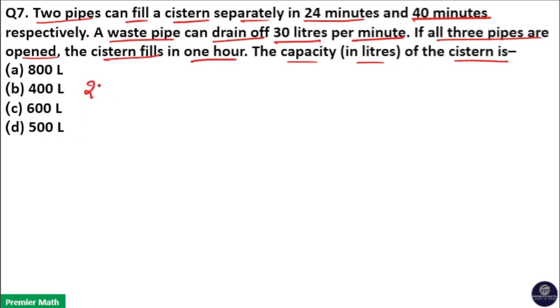Here, the first pipe can fill this tank in 24 minutes, the second pipe can fill this tank in 40 minutes, and the third pipe, a waste pipe, can drain off 30 liters per minute. We don't know in how much time this waste pipe will empty this tank. So I will take x minutes, the time for the waste pipe to empty this tank.